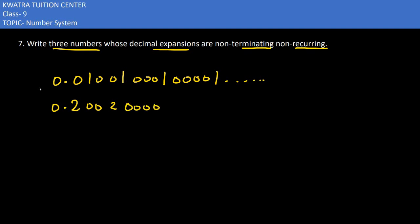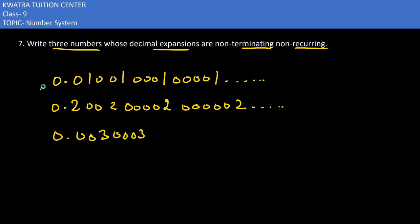The second thing we can write is 0.2002 or anything you want to mention. How should it be? Non-terminating and non-recurring — that means you can't repeat something every time. So this would be your answer. You can write anything you want to.